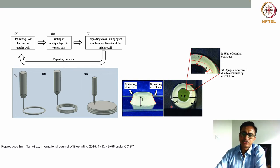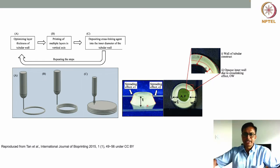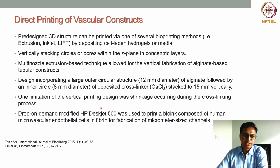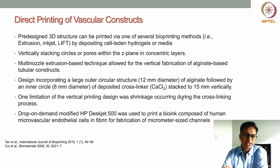One disadvantage of this approach is spreading of the bottom layers due to gravity — when layers are stacked on top of each other, the weight causes the base layer to spread, resulting in a slanting structure. Another limitation is shrinkage occurring due to the cross-linking process.